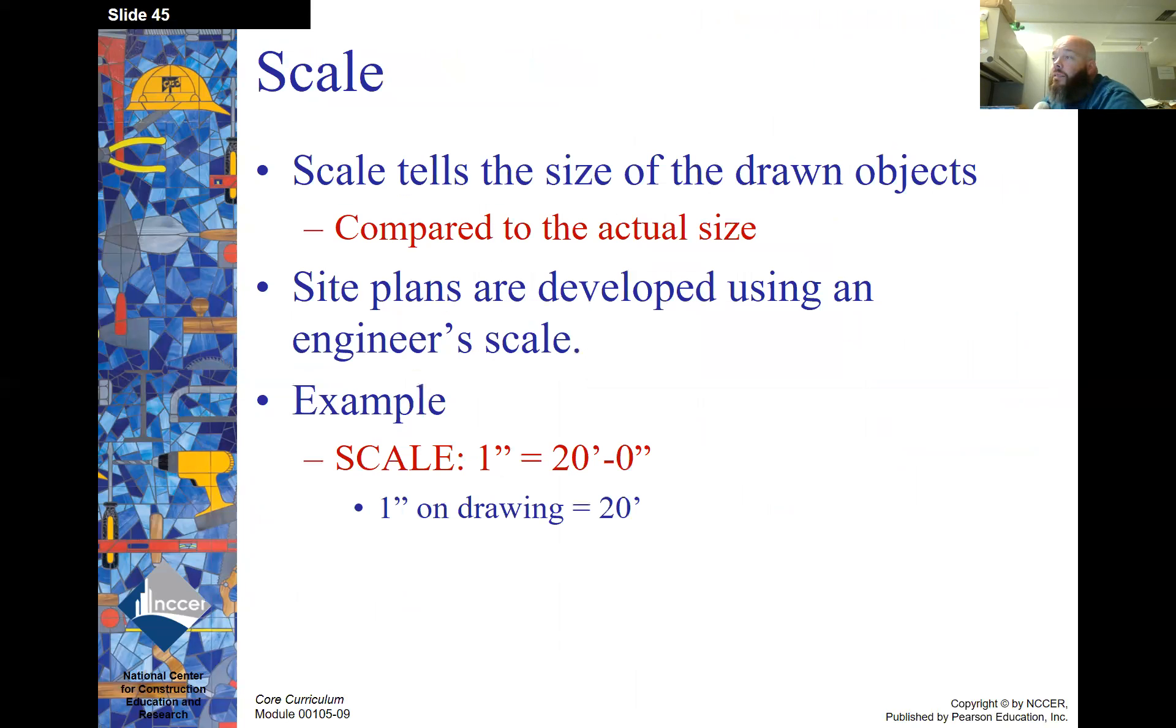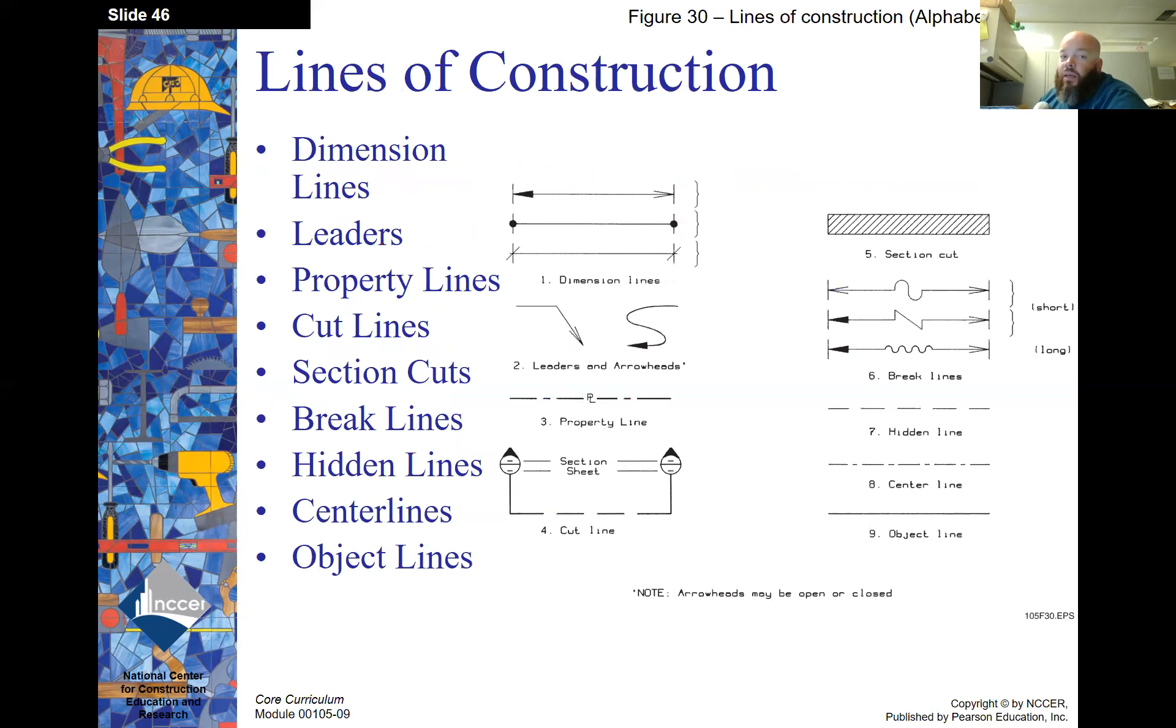Here's the scale. The scale tells the size of the drawn objects compared to the actual size. So we're not going to get a piece of paper as big as the building that we're in. We're going to draw that scaled down. So site plans are developed using an engineering scale. An example of a scale would be one inch equals 20 feet and zero inches. So basically one inch on the drawing would equal 20 feet in real life.